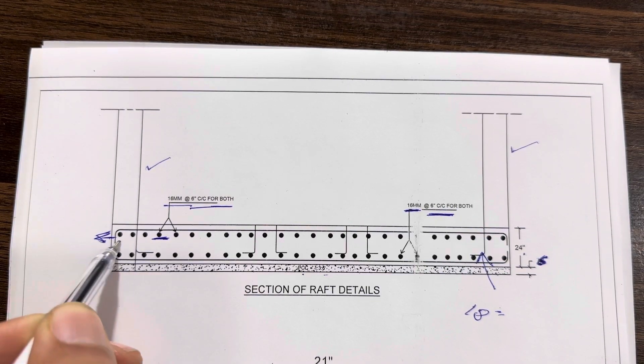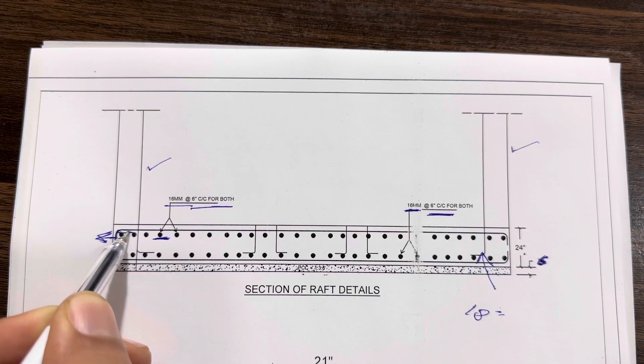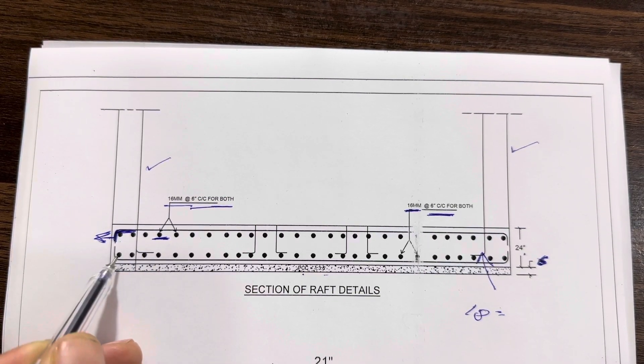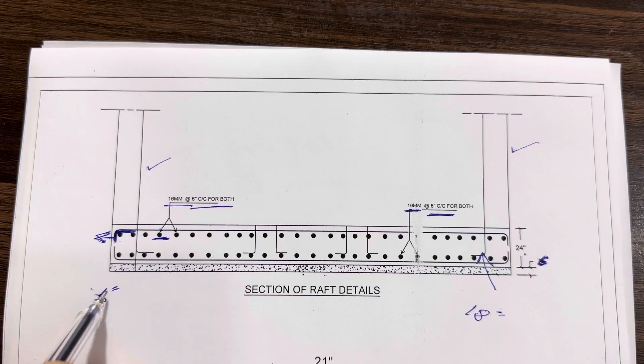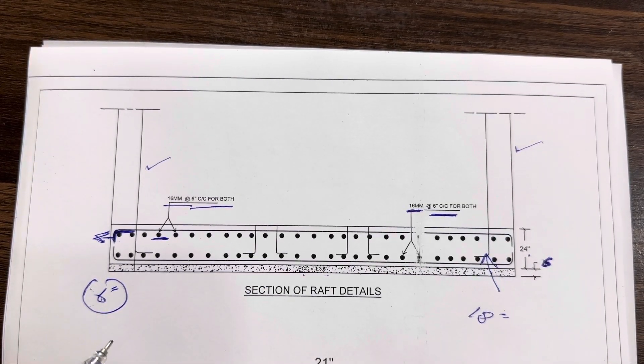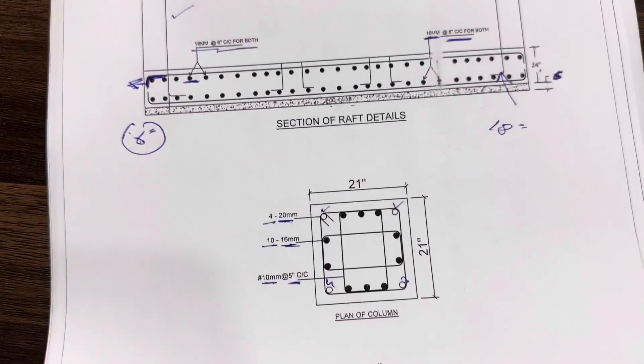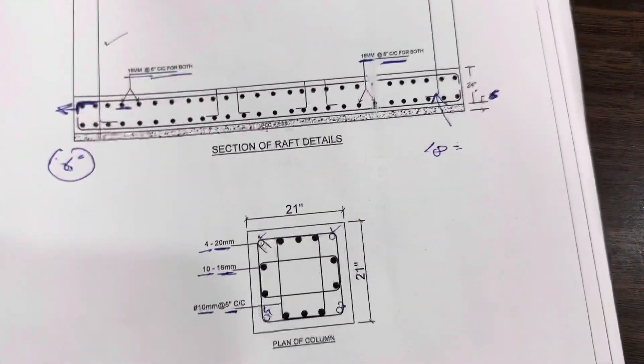You can see these are hooks. The hooks should be provided at the end, or you can see this is called development length also. If the bed depth is 18 inches, it should not be less than six inches normally. These are some important information related to section of raft foundation, size of column, inside steel reinforcement.